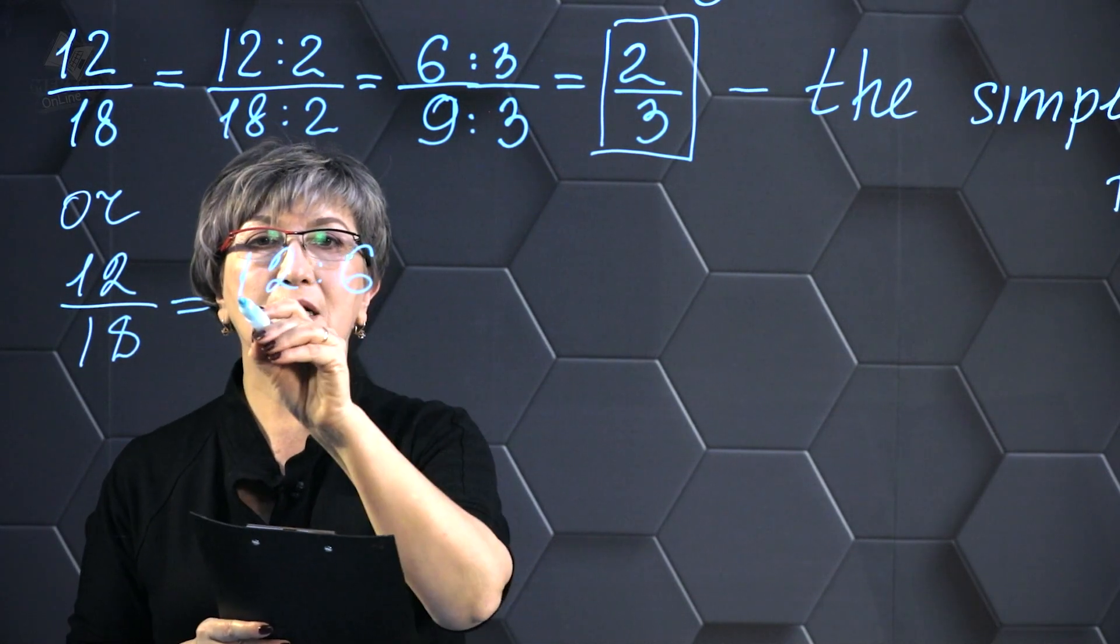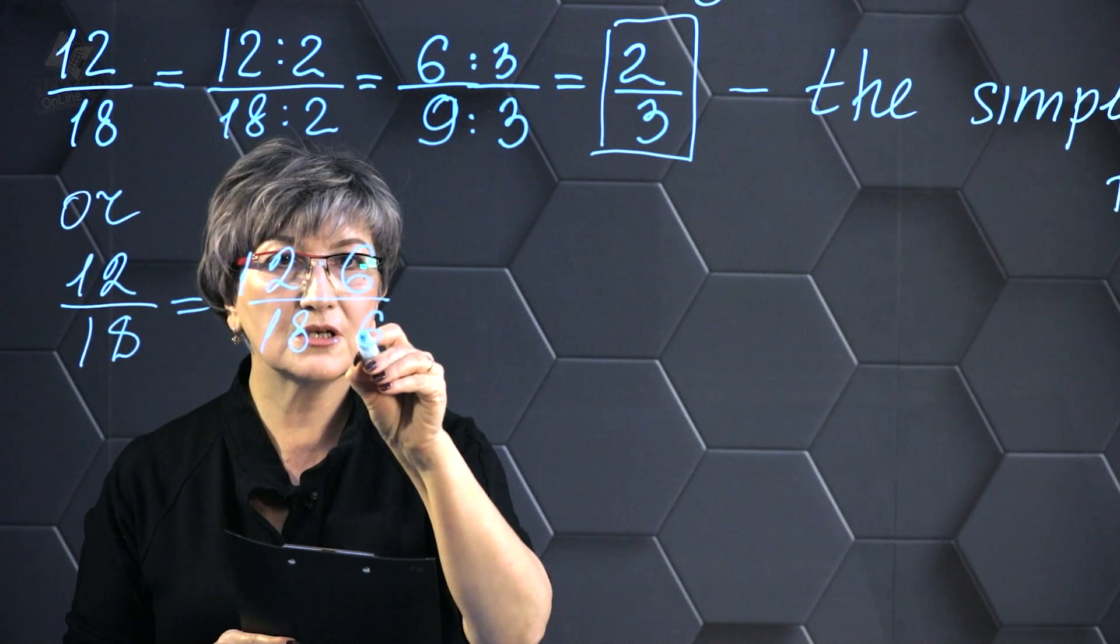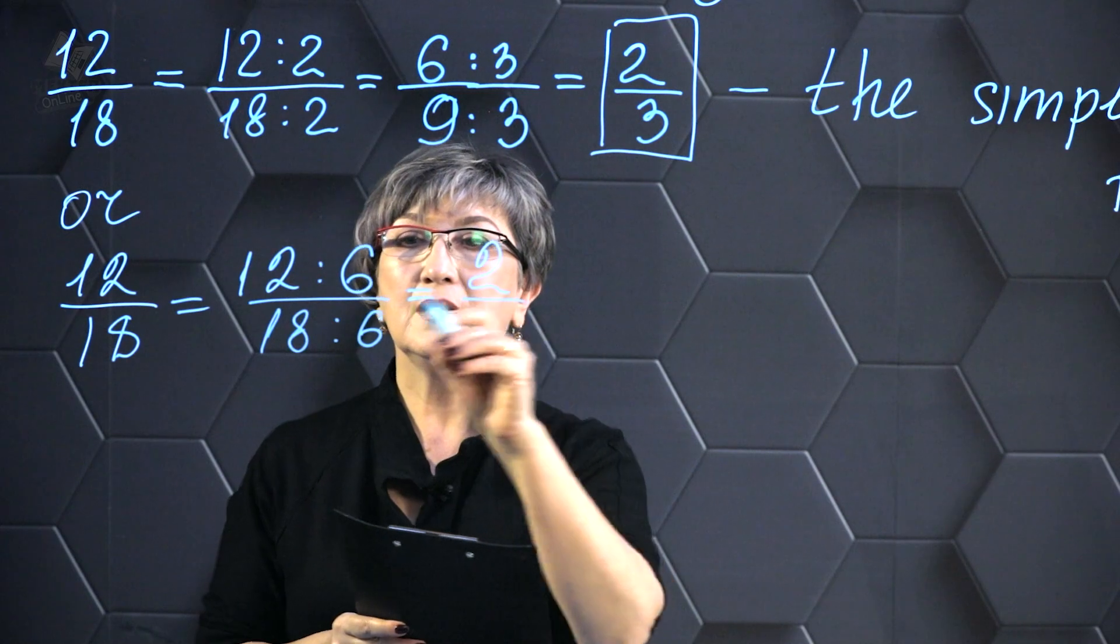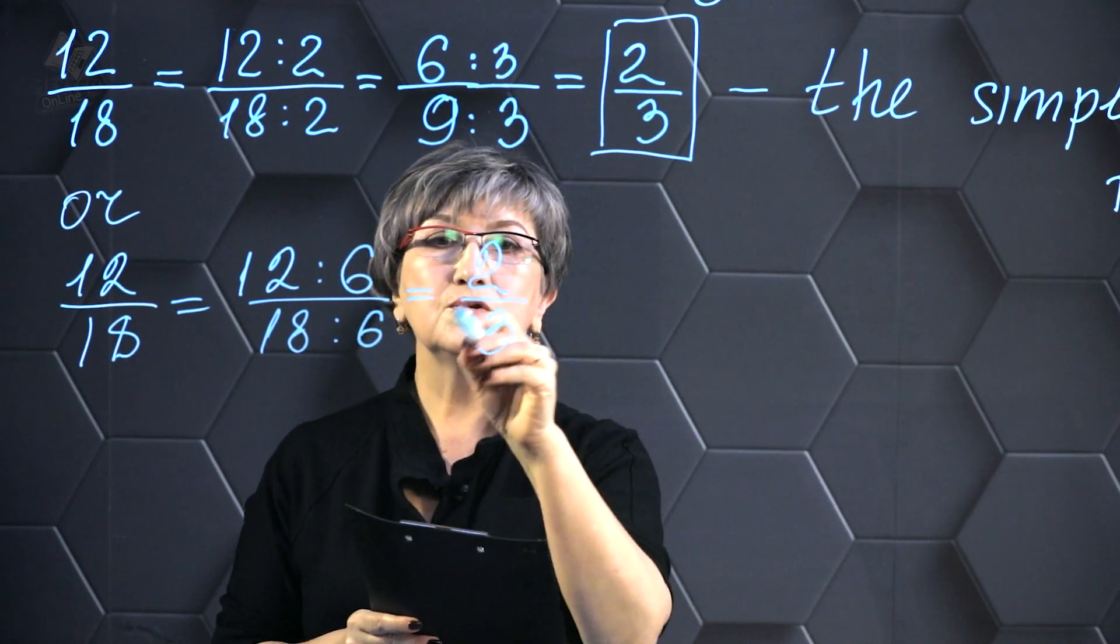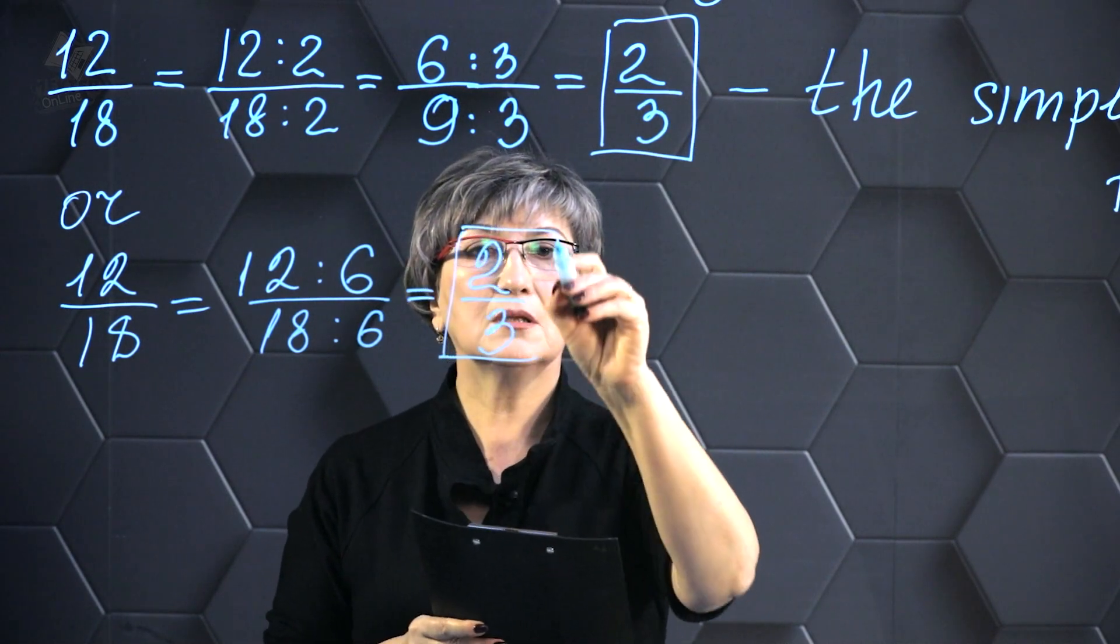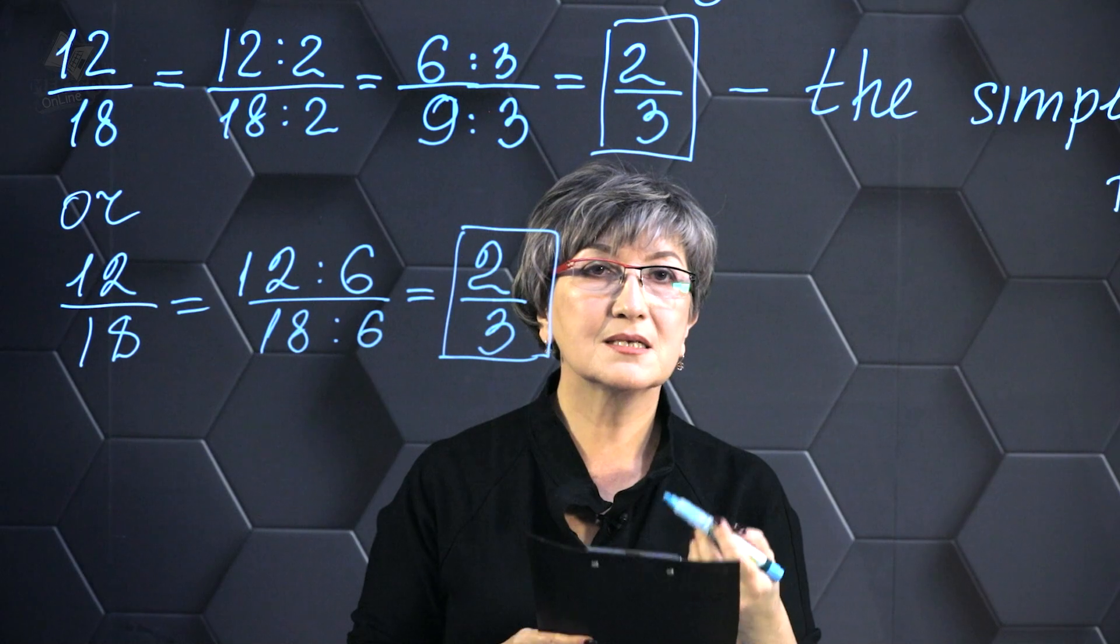12 can be divided evenly by 6 and 18 can also be evenly divided by 6. If I divide 12 by 6, I will get 2. 18 divided by 6 will also be 3. As a consequence, I will obtain precisely the identical response. 2 thirds is an irreducible fraction.